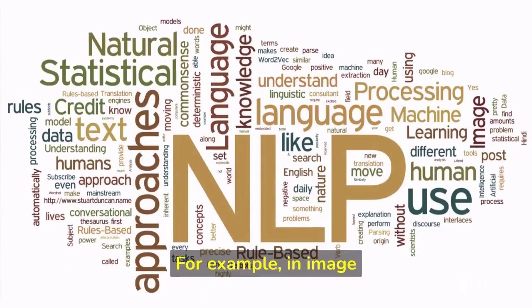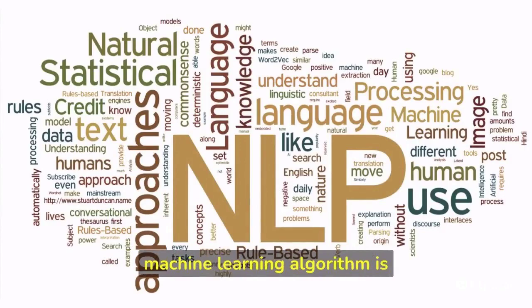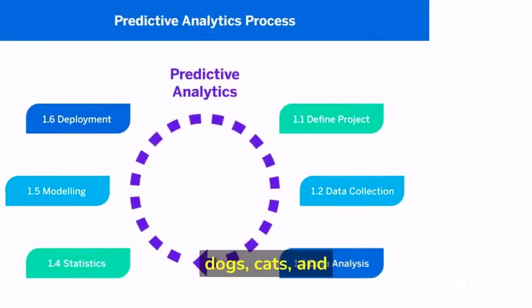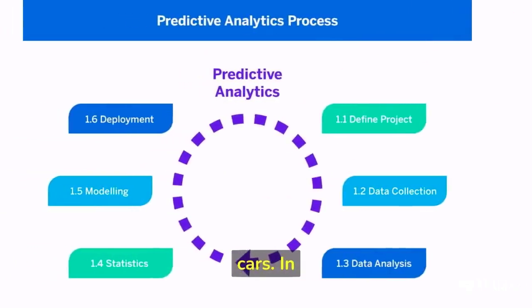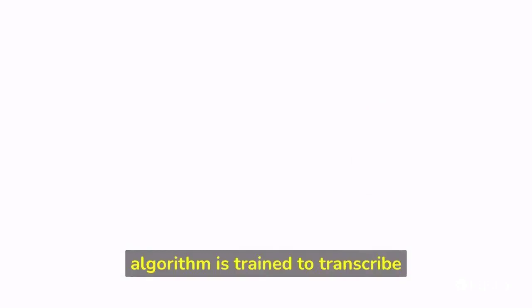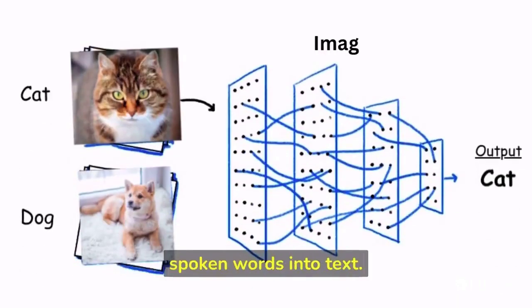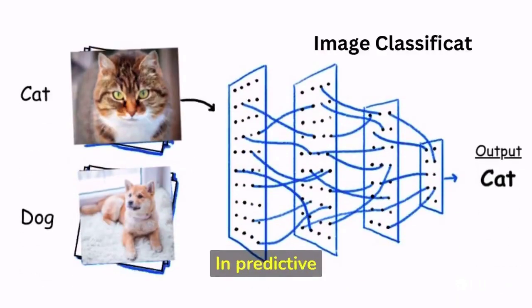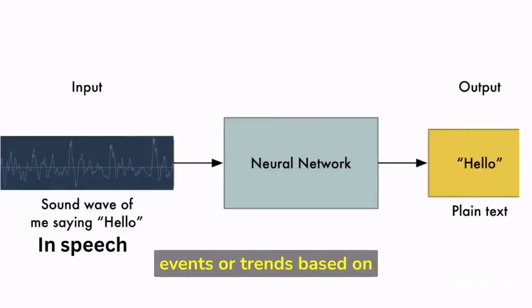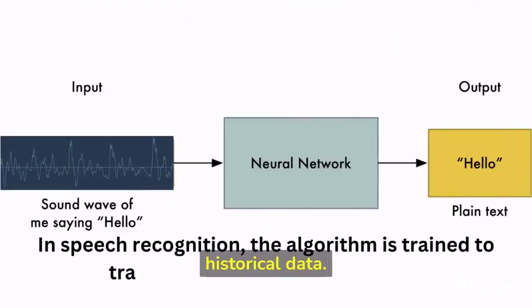For example, in image classification, a supervised machine learning algorithm is trained to identify objects in images, such as dogs, cats, and cars. In speech recognition, the algorithm is trained to transcribe spoken words into text. In predictive analytics, the algorithm is trained to forecast future events or trends based on historical data.